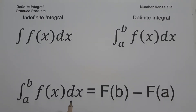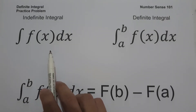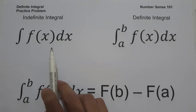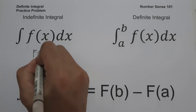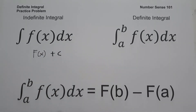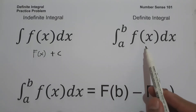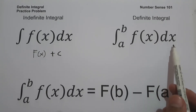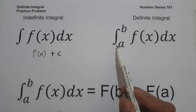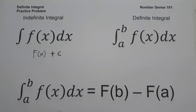If you integrate an indefinite integral it will give you a function in terms of x. The anti-derivative of lowercase f of x dx is capital F of x plus a constant c. If you integrate a definite integral, it will give you a specific value. To evaluate a definite integral we use the formula: the anti-derivative of f(x)dx from a to b equals F(b) minus F(a).